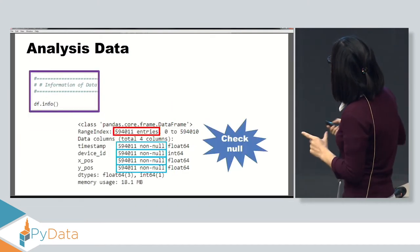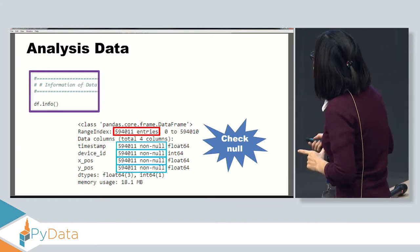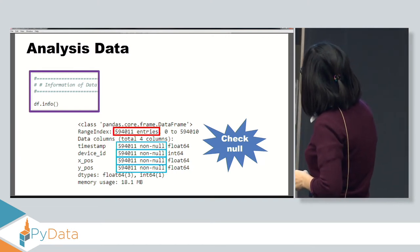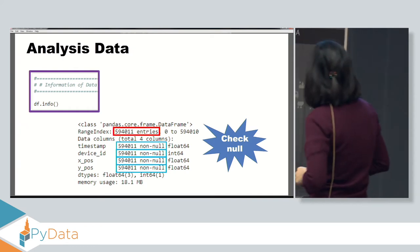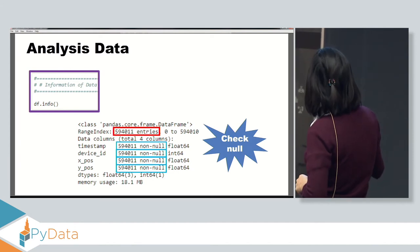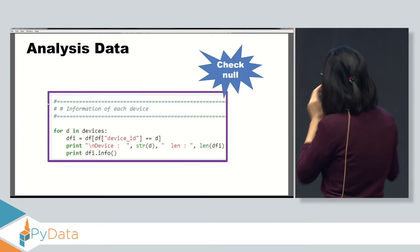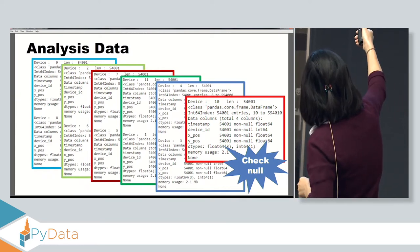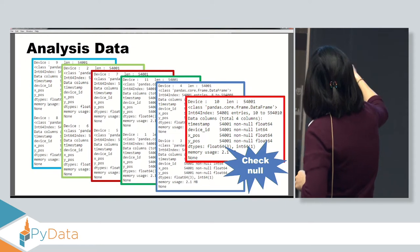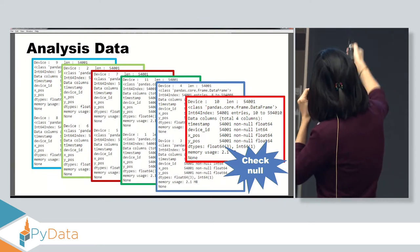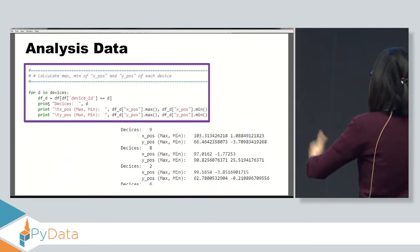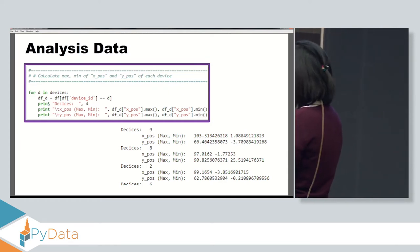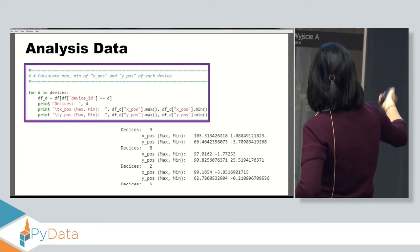To know the details of the information inside the data, we can use DataFrame.info(). We find that timestamp type is float, device ID type is int, and X-port and Y-port are float, with no null values. We can do the same for each device individually to see clearly. The record count we receive from each device is smaller than the total records from all devices combined.